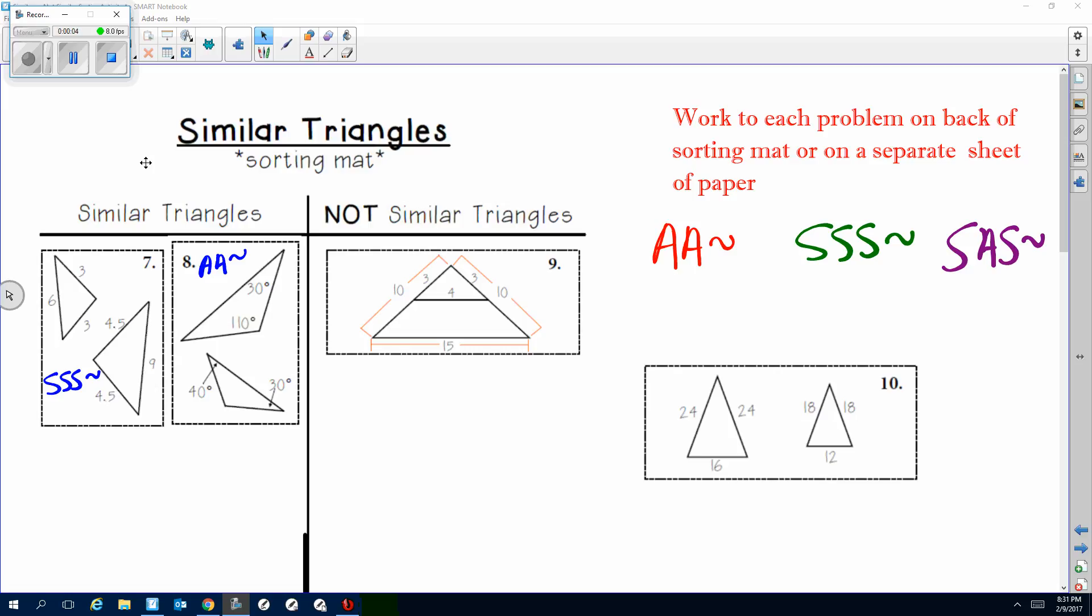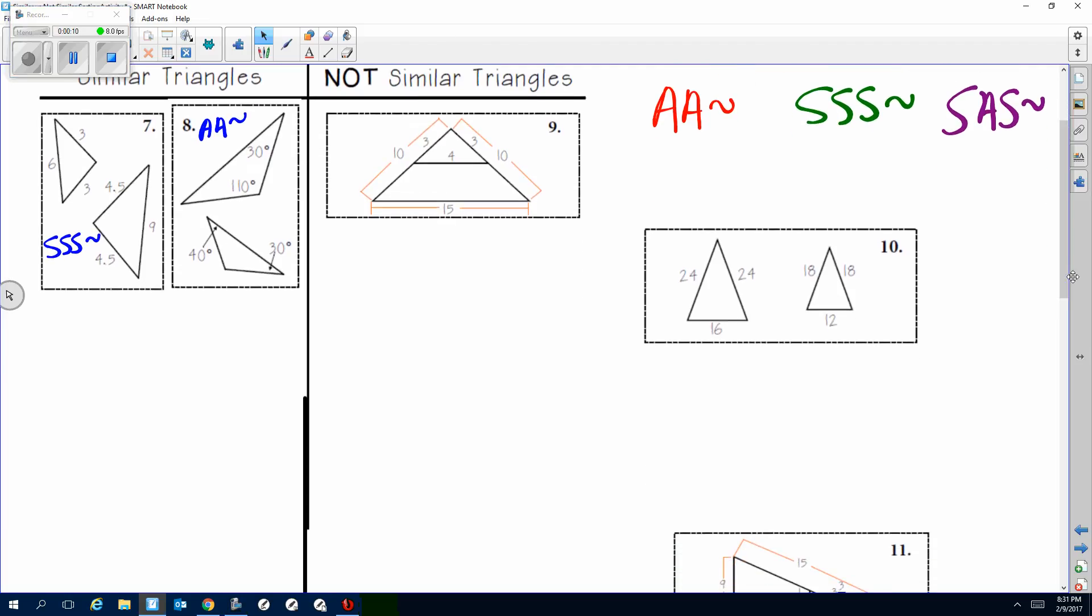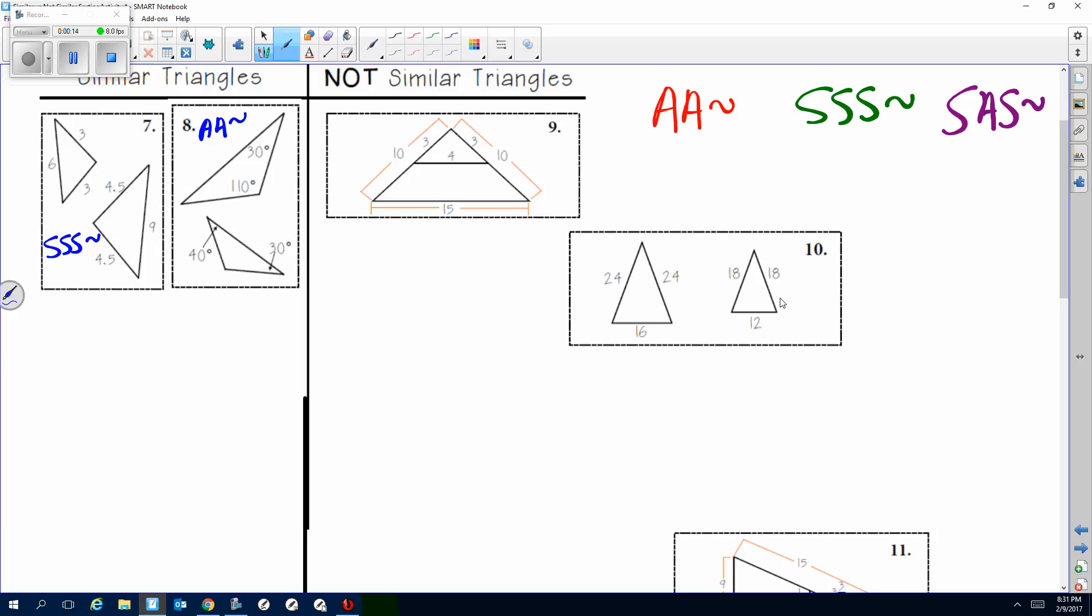All right, here's number 10, very similar to 9 or 7 because they've given us three sides. So what you want to do is check and see if those are proportional. Let's make sure I'm reading this right because my copy looks kind of light. Number 10, all right. So yeah, this side is 24.